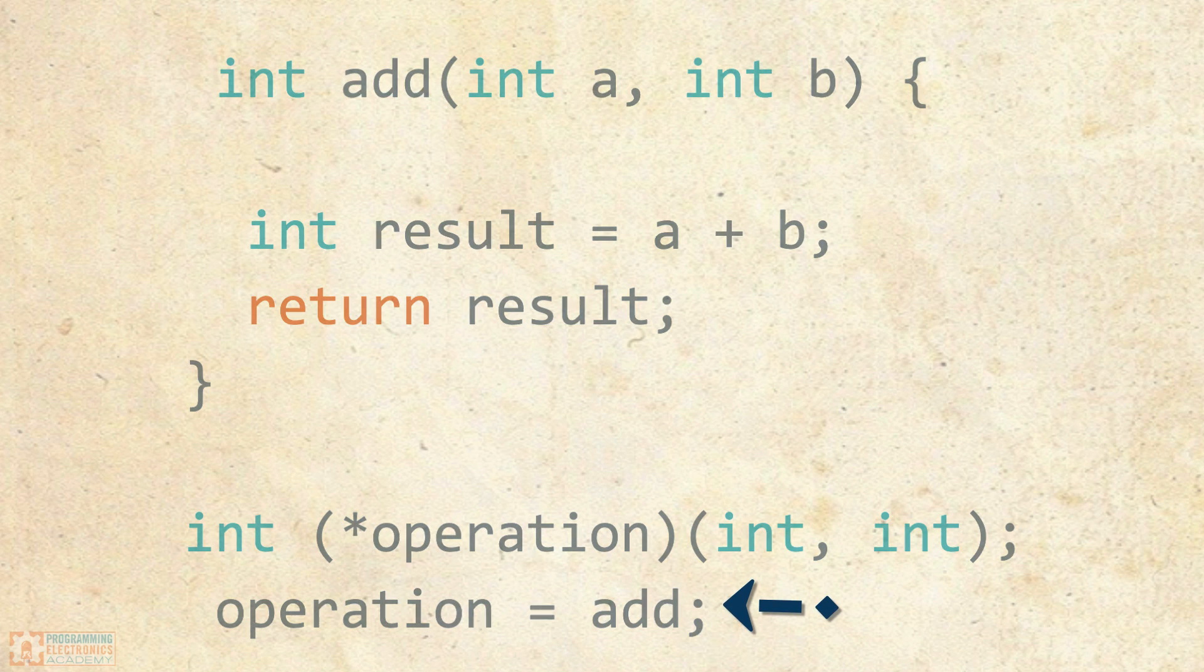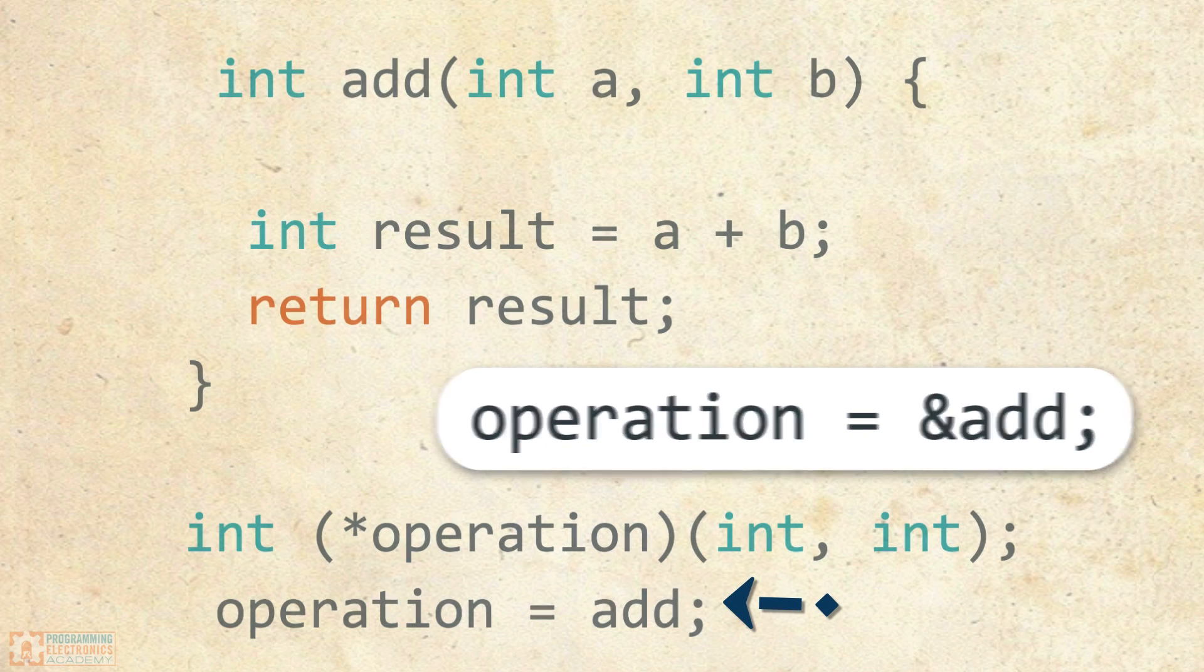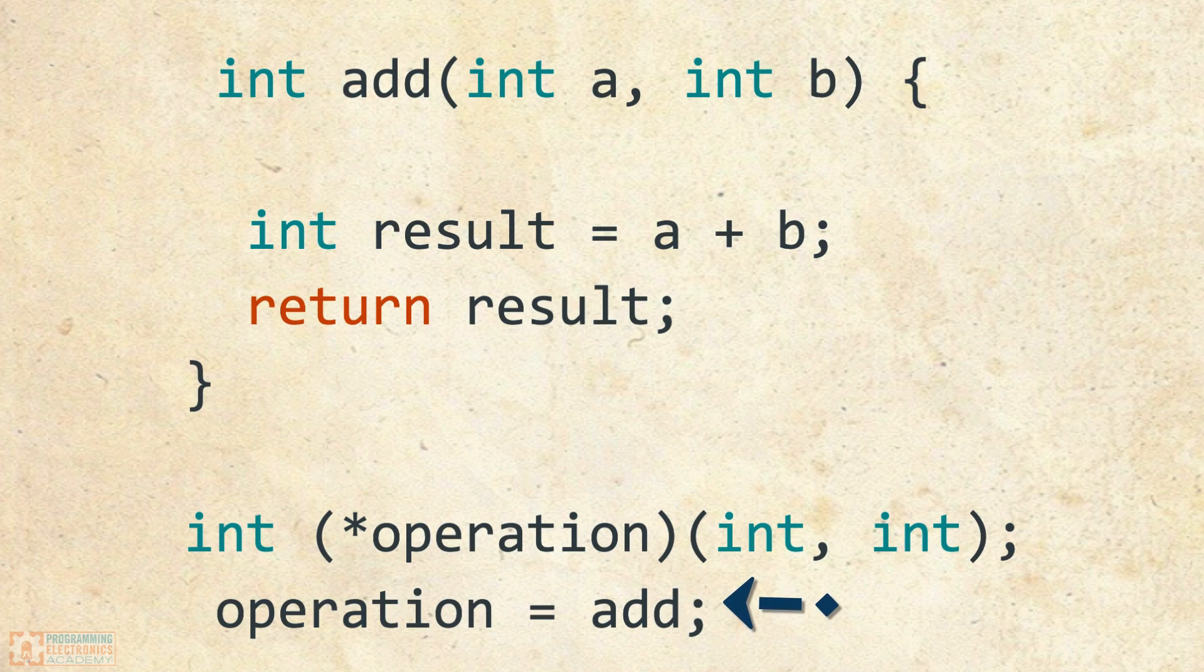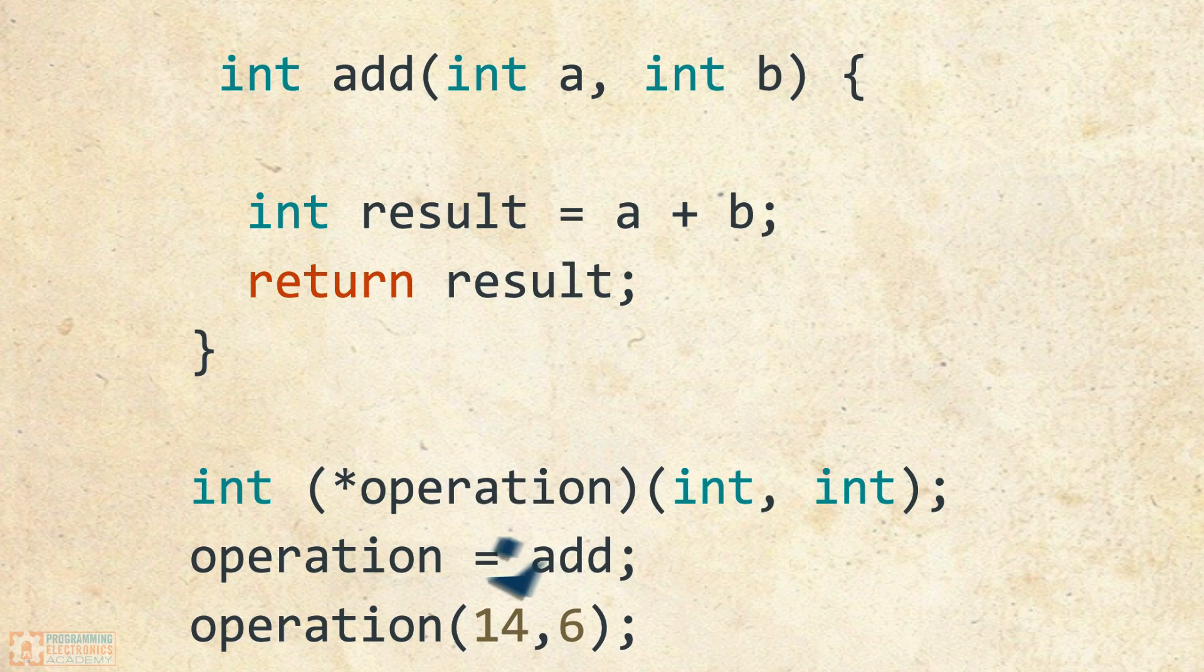Now you might be like, hold on a second. Shouldn't it be operation equal to ampersand add? Shouldn't we be using that reference operator in front of add to get the address of add? Well, we actually don't have to do that because the compiler inherently uses the function's address when its name is referenced. So now with these lines of code, operation is pointed to add. Now what gets really interesting is that we can use operation just like we could use add. So we've got here operation and we're passing it two arguments, 14 and 6. And since operation is pointing to the add function, it would return the sum of those two values.